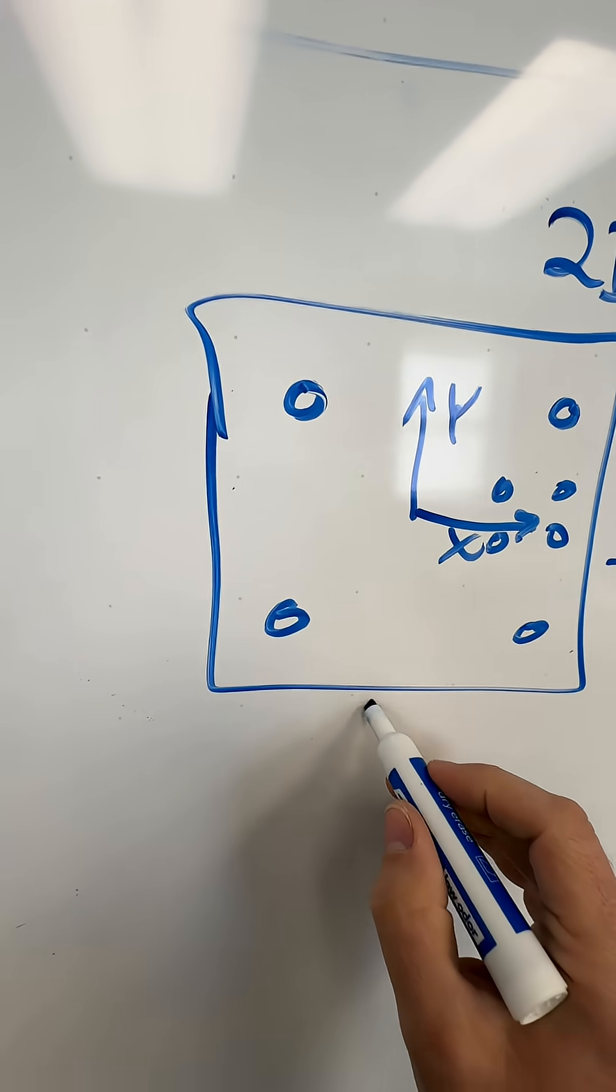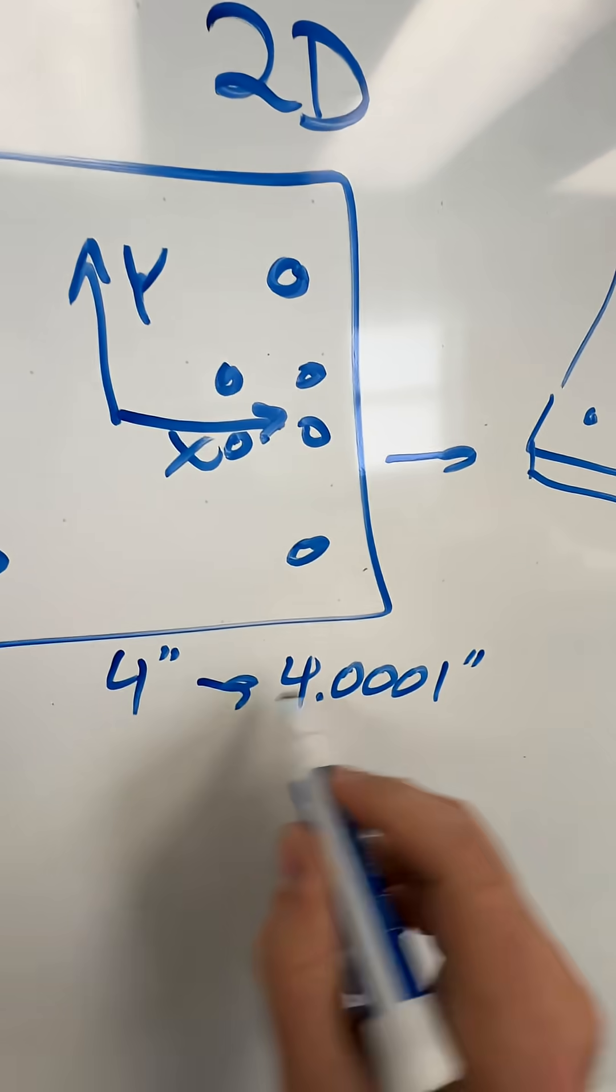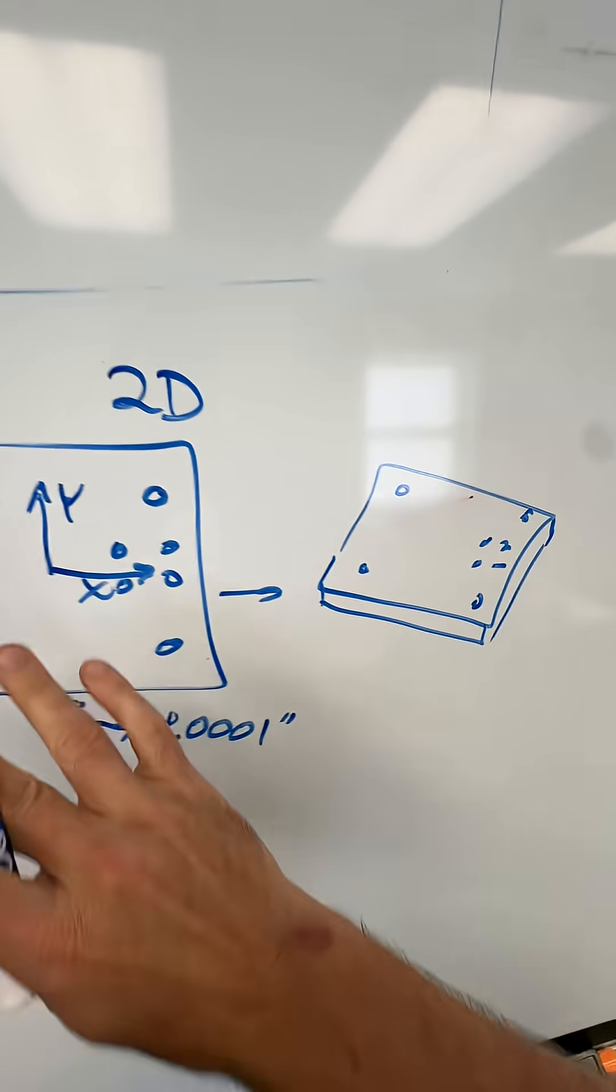You want to change the dimension here. If this was four inches, you want to go to like 4.0001 inches. You just type that in and save it and re-export it. That's all there is to it.